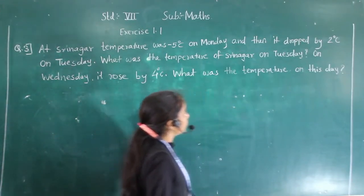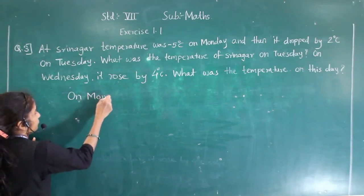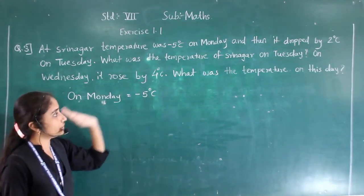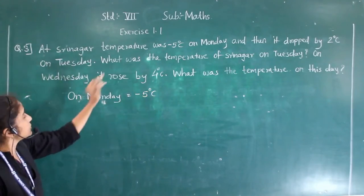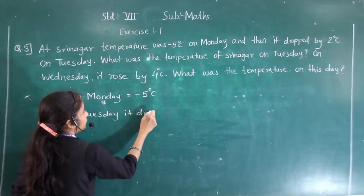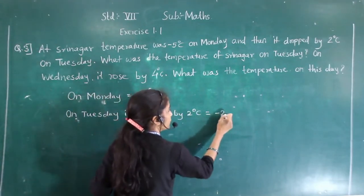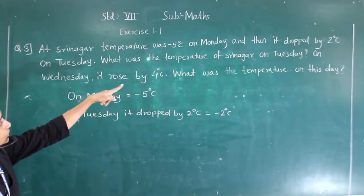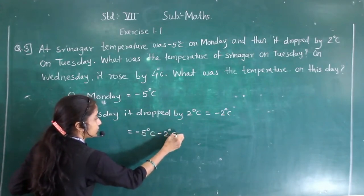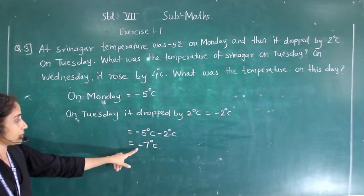On Monday, the temperature was minus 5 degree Celsius. And then it dropped by 2 degree Celsius on Tuesday, so minus 2 degree Celsius. So the temperature on Tuesday will be minus 5 minus 2, which equals minus 7 degree Celsius.